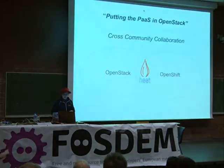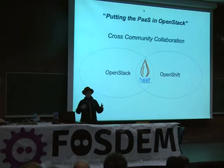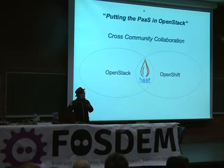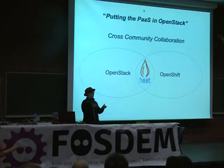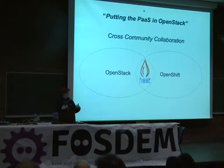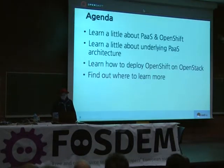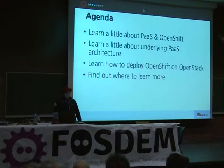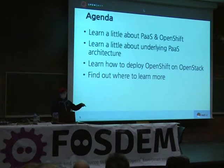This presentation comes out of a cross-community collaboration between the OpenShift open source project and the OpenStack open source project and the team working on Heat, which is OpenStack's orchestration layer. This is how I managed to coerce people into helping me get a PaaS into OpenStack through the back door. Today I'll talk about what PaaS is in OpenShift, the underlying architecture, and how to deploy OpenShift on OpenStack — no demo because I only have 15 minutes.